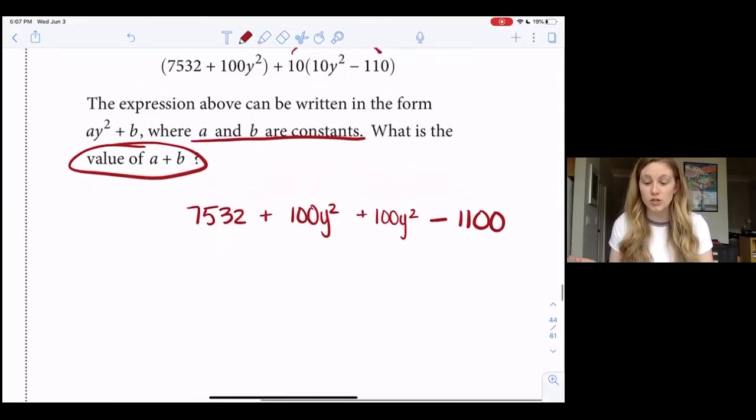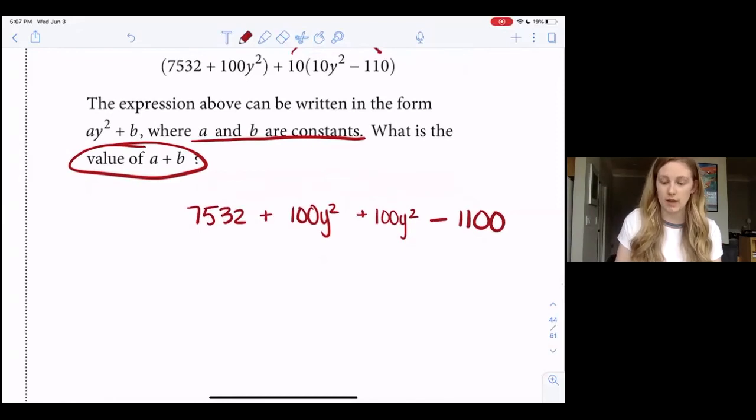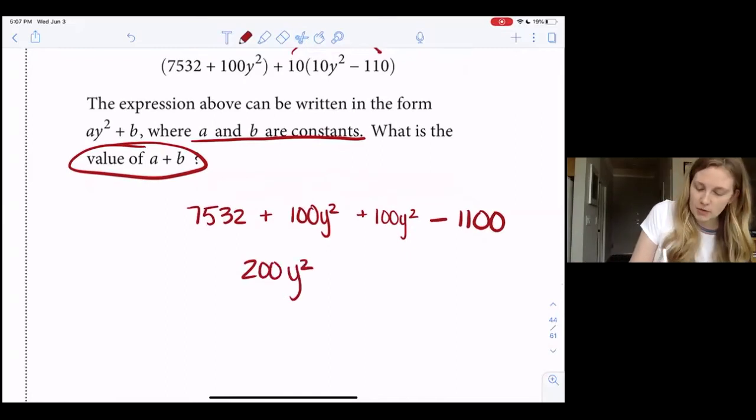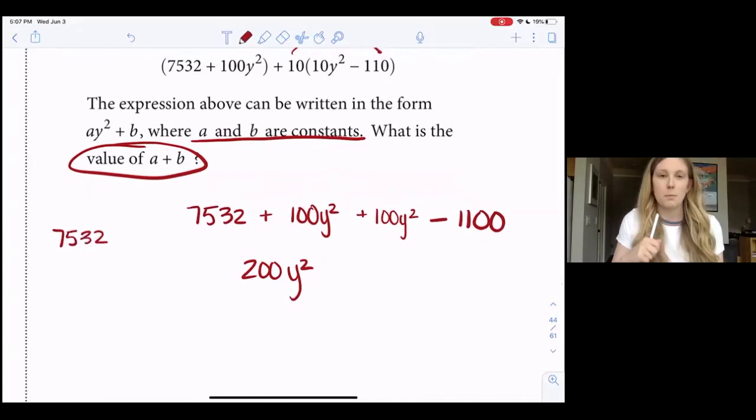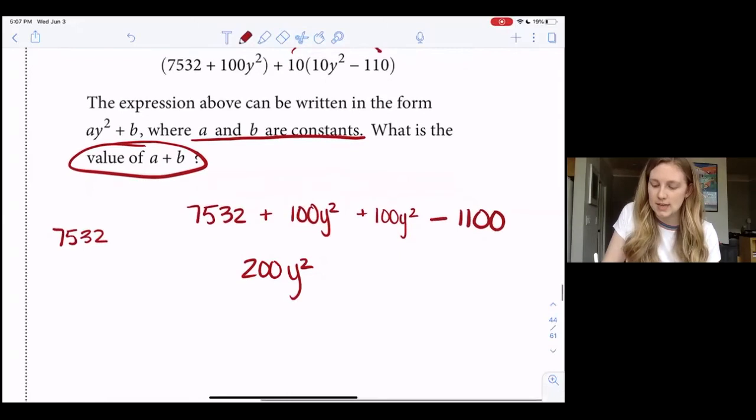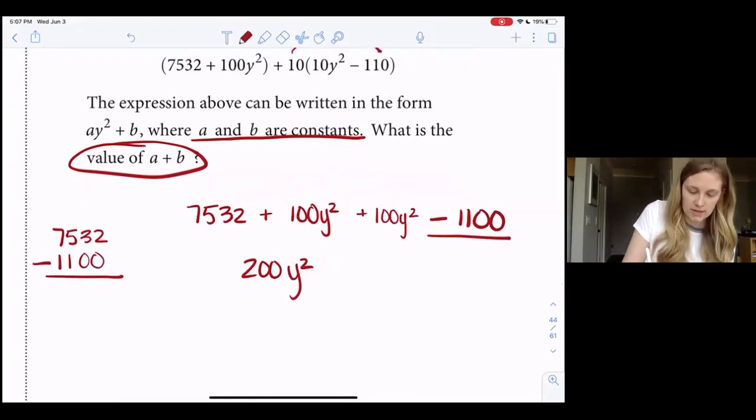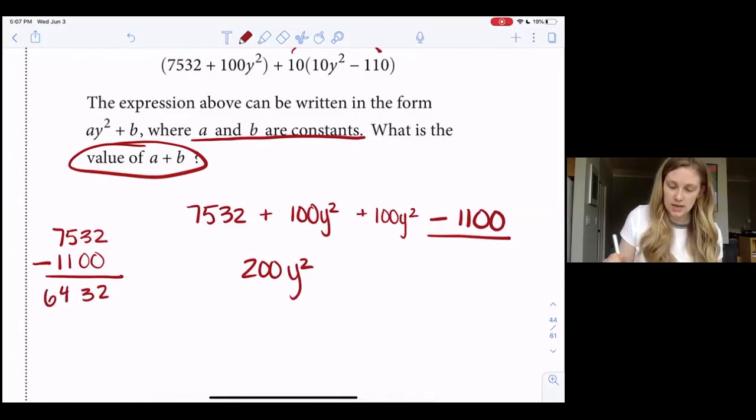So now I just combine like terms. I have 100y² plus 100y². Well, 100 plus 100 is 200y². And then I have, I'm going to write this on the side, I have 7532 minus 1100. Okay, well 2 minus 0 that's 2, 5 minus 1 is 4, 7 minus 1 is 6. And so that's that term, and it's positive, plus 6432.